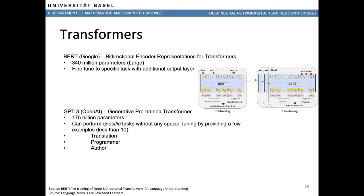On the other side, we have GPT-3 from OpenAI — currently the newest and best-performing — which stands for Generative Pre-trained Transformer, version three. This network has literally blown all competition away, with 175 billion parameters. It can perform specific tasks without any special tuning by providing fewer than 10 examples. Going from 340 million to 175 billion parameters is quite a scale magnitude. GPT-3 can do everything from translation to programming to acting as an author.